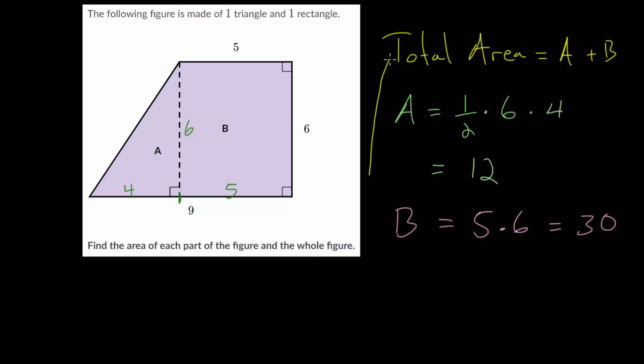Now we can find our total area. It's just the area of A, which was 12, plus the area of B, which is 30, and we get 42. Again, we don't have any units here that are explicitly labeled, so we can just say 42 square units.